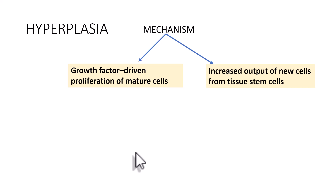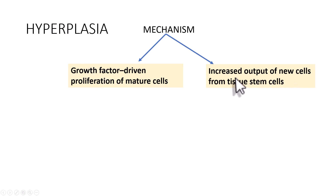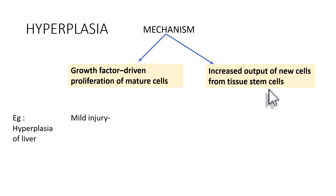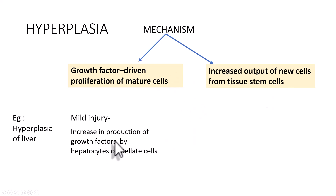What is the mechanism of hyperplasia? There are two important mechanisms to understand. One, hyperplasia can be growth factor driven proliferation of mature cells — it is because of proliferation of mature cells due to growth factors. Or it can be because of increased output of new cells from the tissue stem cells. Let's understand this using the example of liver hyperplasia. If there is very mild injury of the liver, what happens is there is increase in the production of growth factors by the hepatocytes or the stellate cells, and those growth factors result in hyperplasia of the liver.